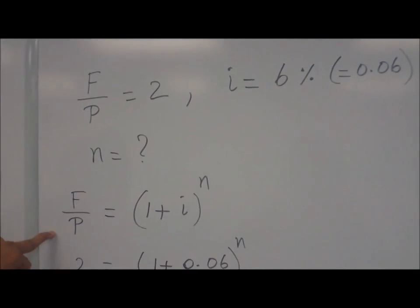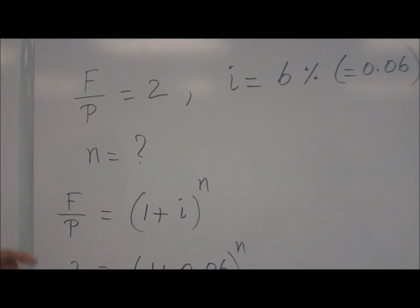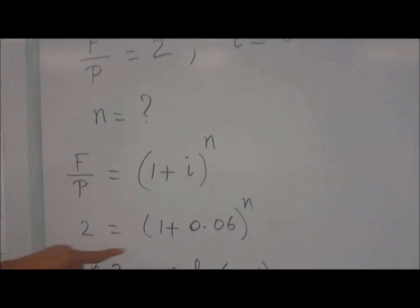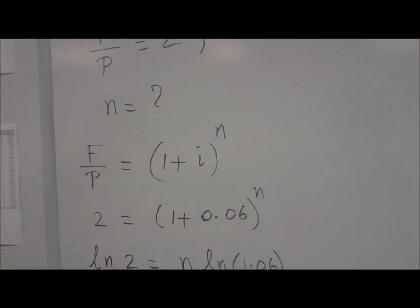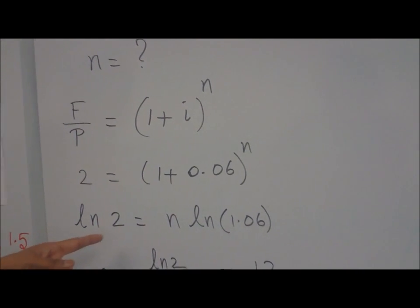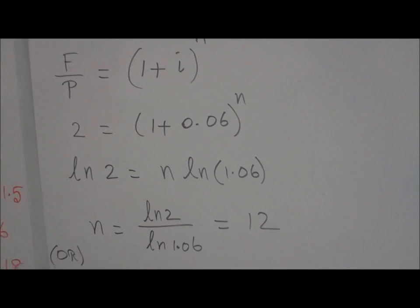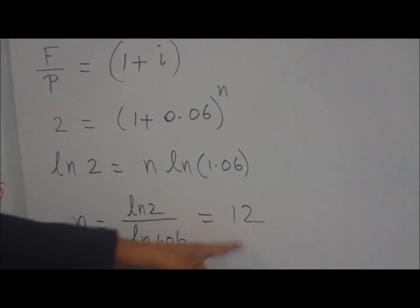So F over P equal to one plus I power N. That's the formula from the formula table. So F over P equal to two, one plus point zero six power N. Solve for N. So take the log, ln two, equal to N ln one point zero six. It's a natural log. So N computed as number twelve.